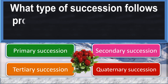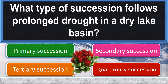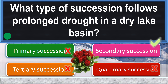What type of succession follows prolonged drought in a dry lake basin? Secondary succession.